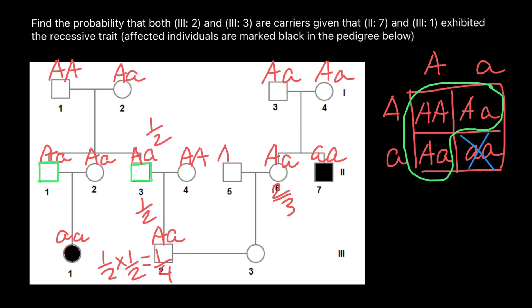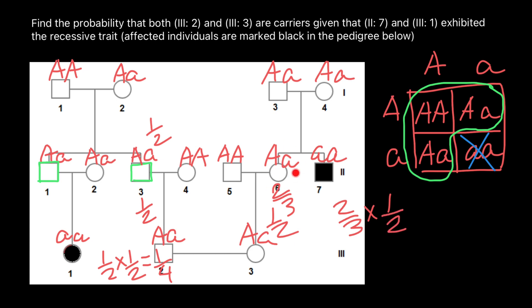So the probability for this female to be a carrier is two-thirds. We also assume that this person, who is genetically unrelated to this family, would be phenotypically and genotypically normal. For the daughter of this couple, from the father's side she can only inherit dominant allele A, and from the mother's side her probability is 50% to inherit the recessive allele and 50% to inherit the dominant allele. So the probability that the daughter is a carrier is two-thirds times one-half — two-thirds probability that the mother is a carrier, and one-half that the mother would pass the recessive allele to her daughter — giving a probability of one-third.